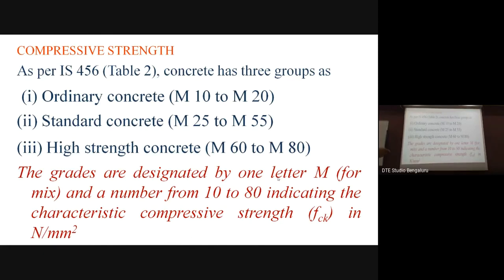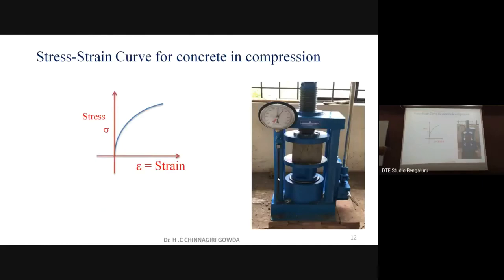The characteristic compressive strength fck is measured in Newtons per millimeter square — it is the compressive strength of a 150mm × 150mm concrete cube at 28 days after curing. When the cube is tested, we get the load versus deformation, i.e., the stress versus strain curve for the concrete cube.